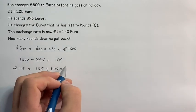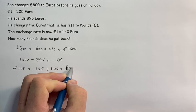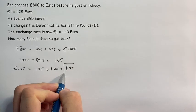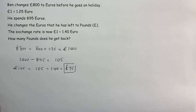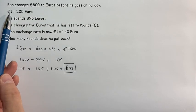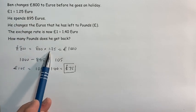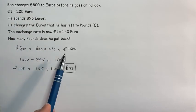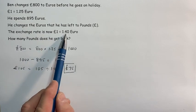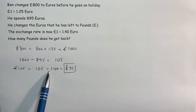That means that on return he has 75 pounds. Rule of thumb: to change from ours to another currency we multiply, and to change from their currency back to ours we would divide.